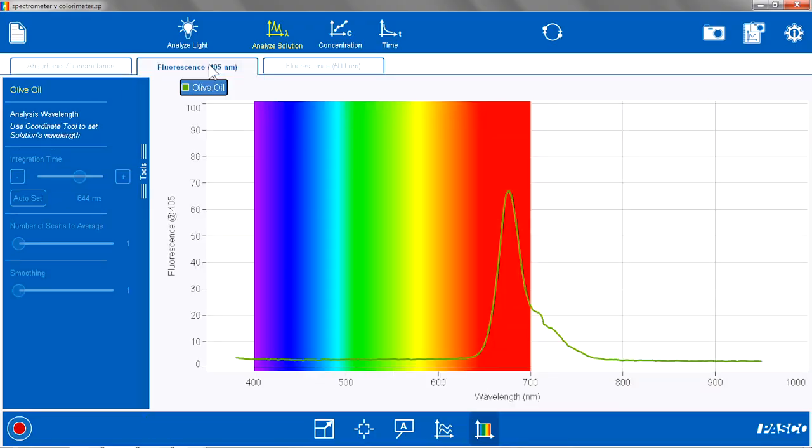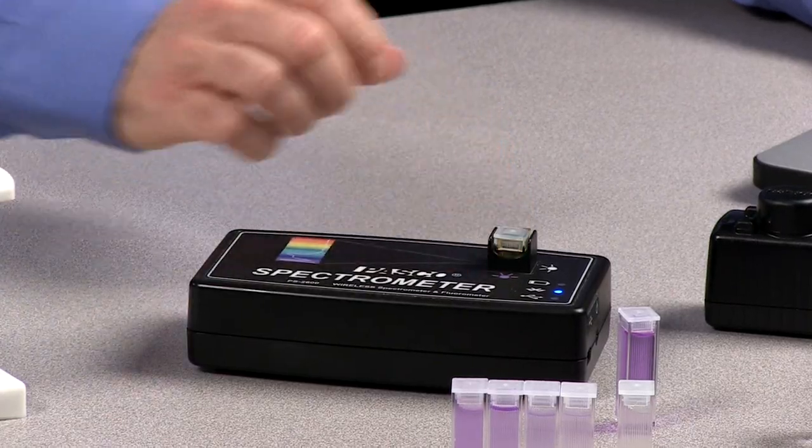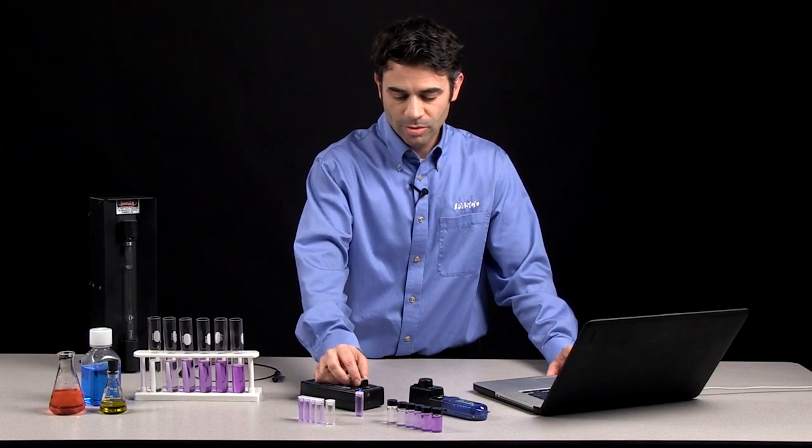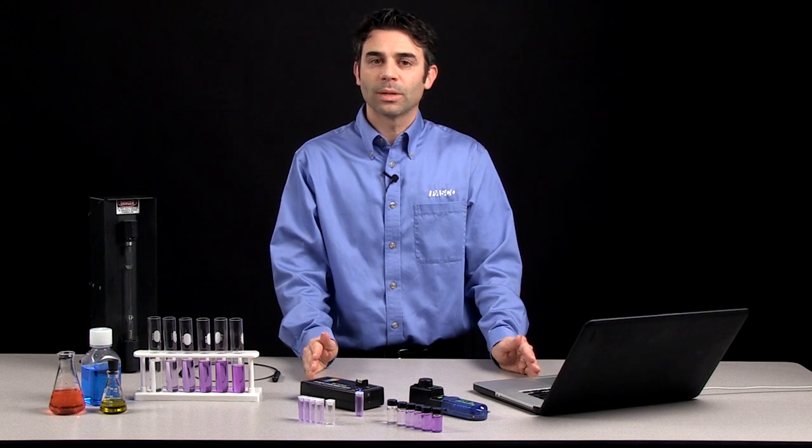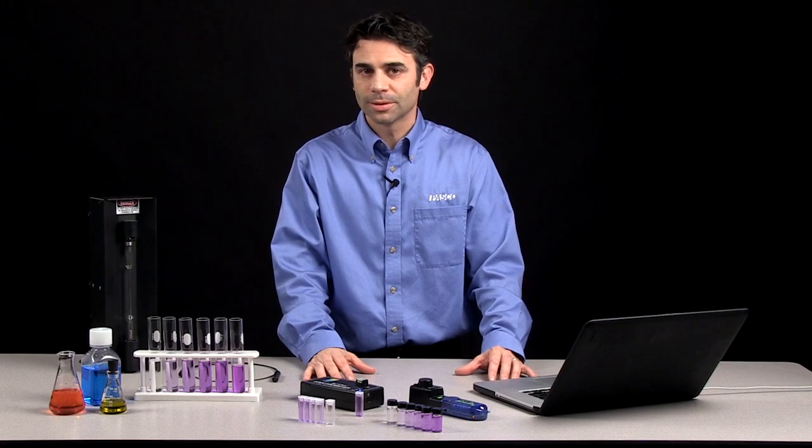And I can go to the fluorescence page in the spectrometry app. And I can see the fluorescence wavelength of that particular sample in the 670 or so range of the spectrum. So a little extra functionality with the spectrometer and the full visible spectrum. But both of these are great tools for initial analysis of colored solutions.